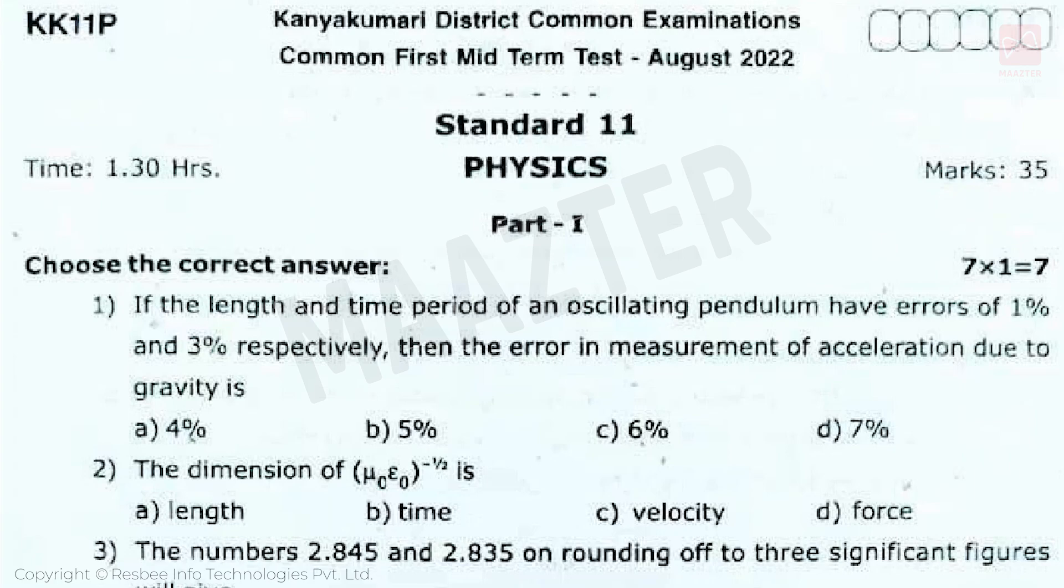First question is: If the length and time period of an oscillating pendulum have errors of 1% and 3% respectively, then the error in measurement of acceleration due to gravity is. The correct answer is option D, 7%. Acceleration due to gravity formula, g is equal to 4π² L by T². In the formula, substitute and we get the answer.